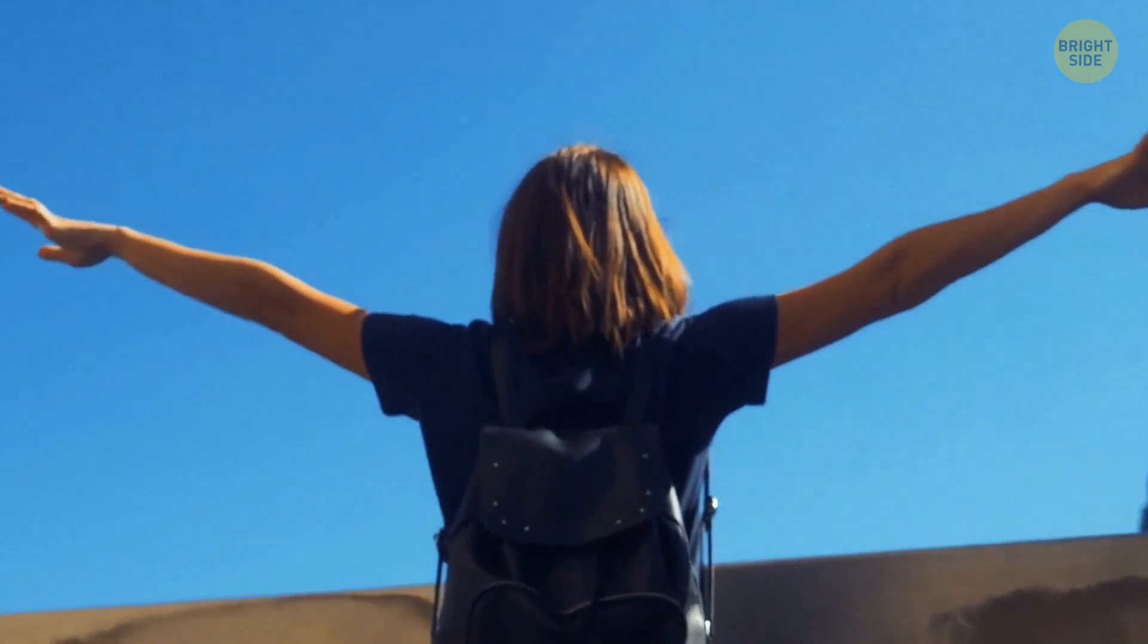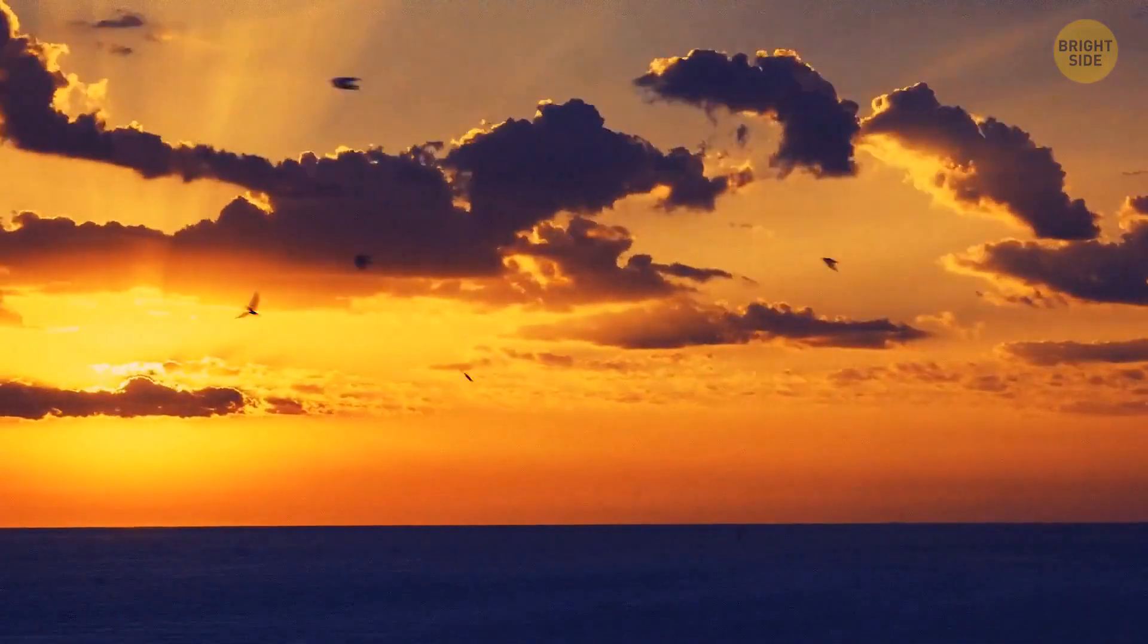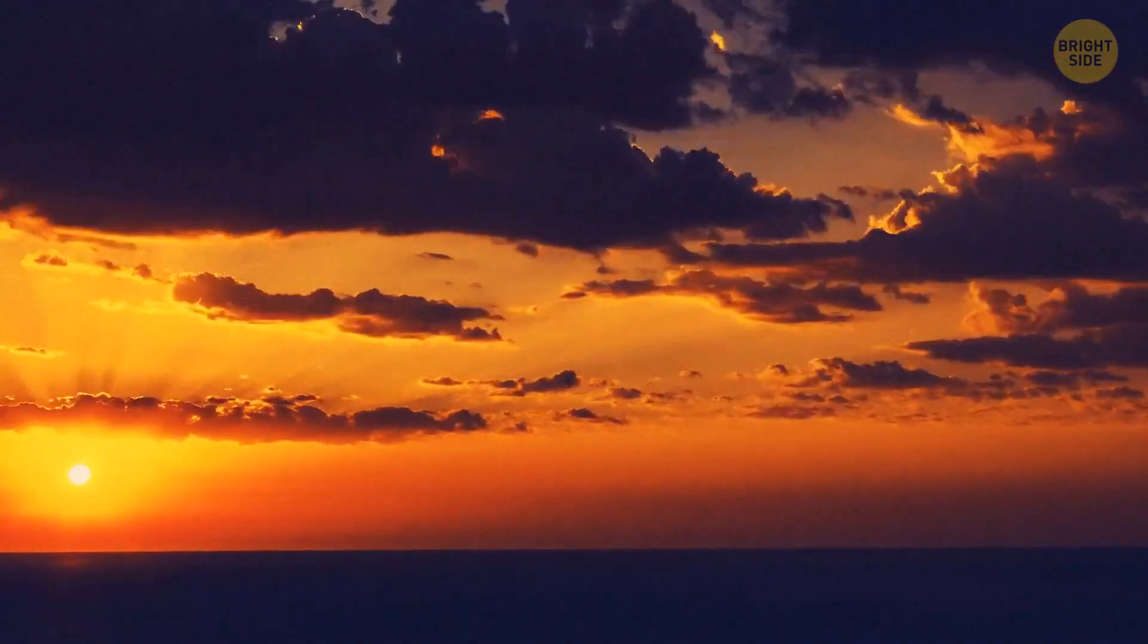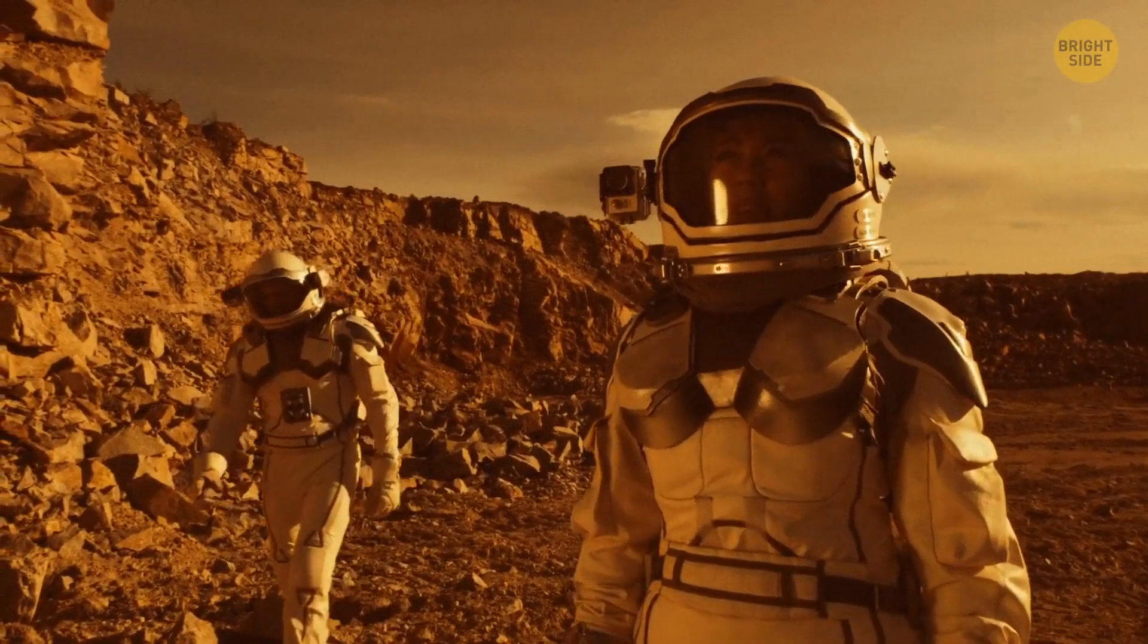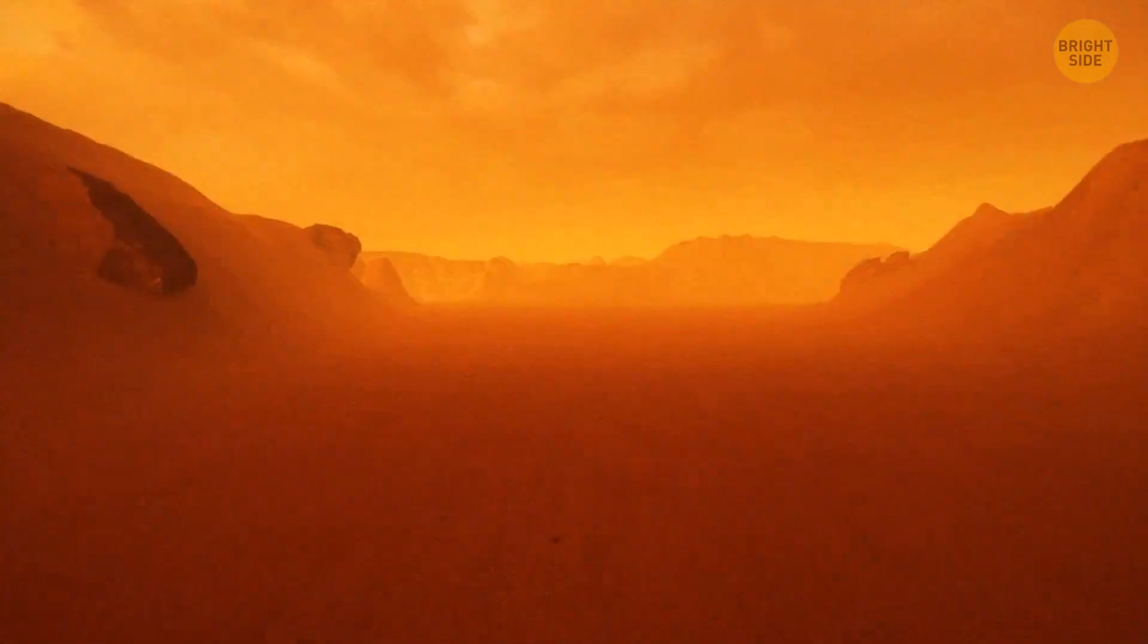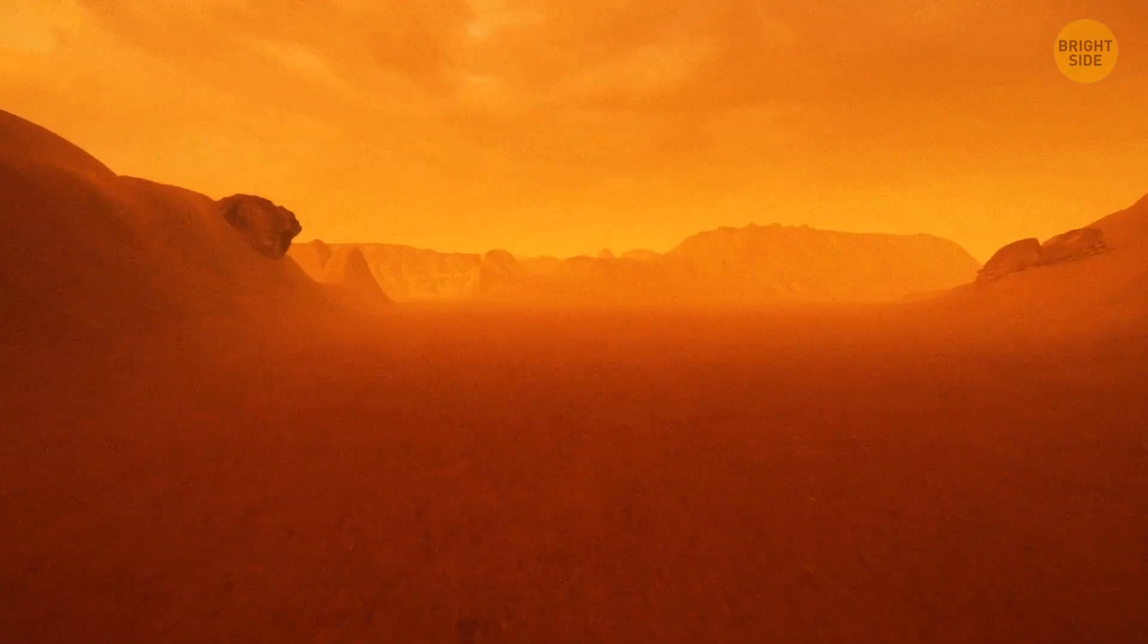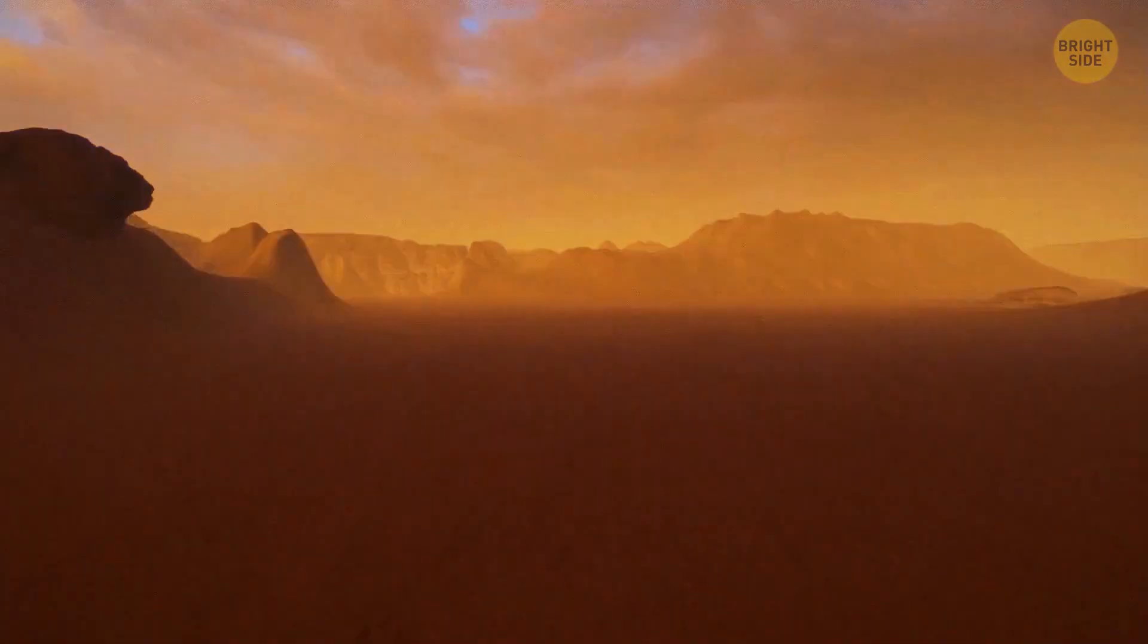Our home planet has a blue sky that slowly transforms into a beautiful orange-red palette at dusk and dawn. But if you ever get a chance to watch a sunset on Mars, you should expect the opposite, an orange-brown daytime sky that gets a bluish tint at sunset.